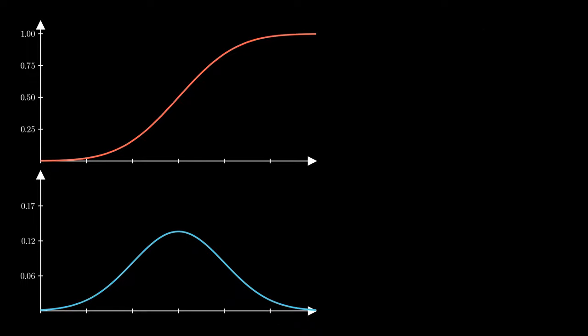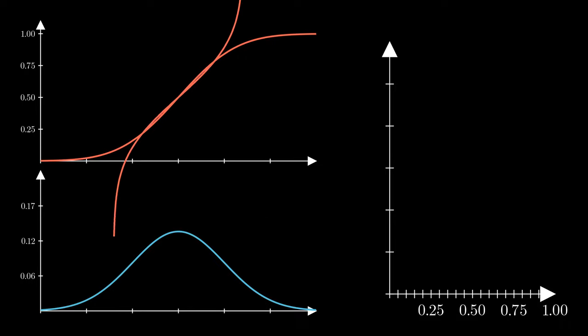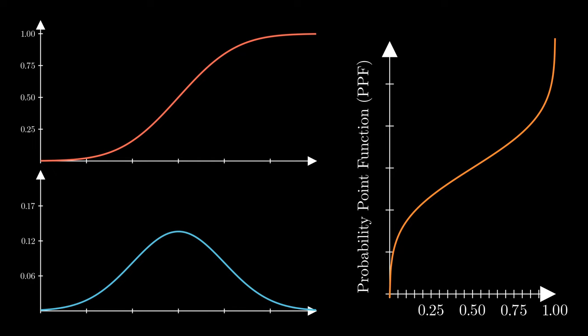I am going to show you one more representation of the normal distribution, the inverse CDF, also called the PPF, the probability point function. I am inverting the axes and therefore tipping the S-shaped curve on its side. This allows me to do inverted lookups.